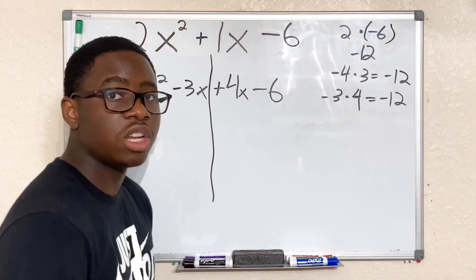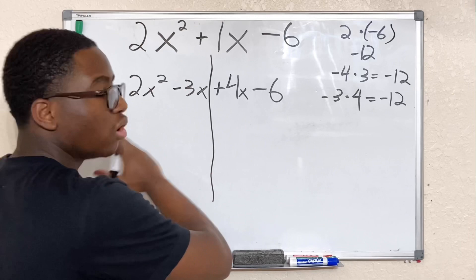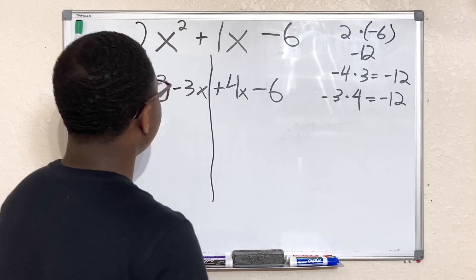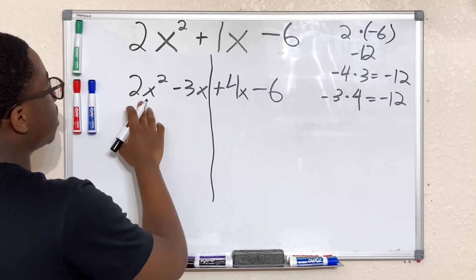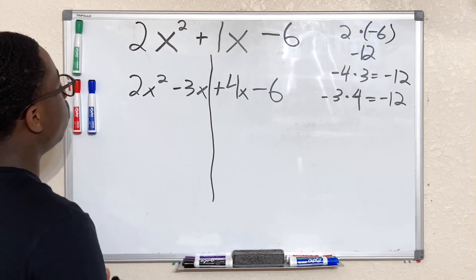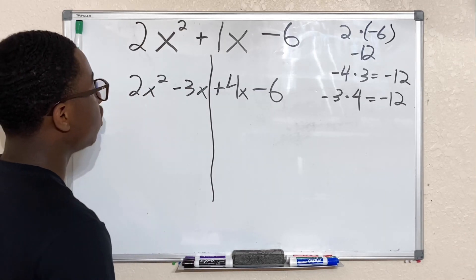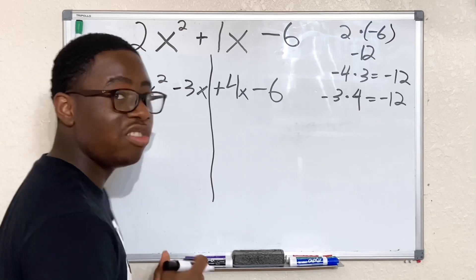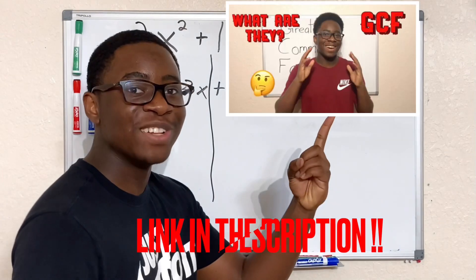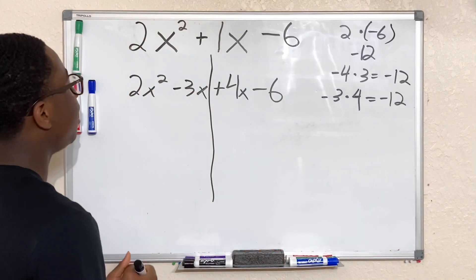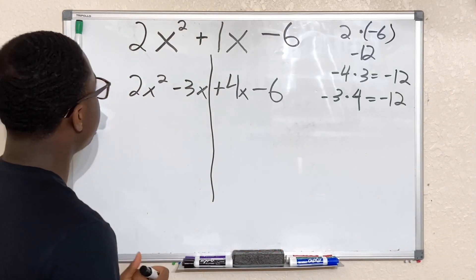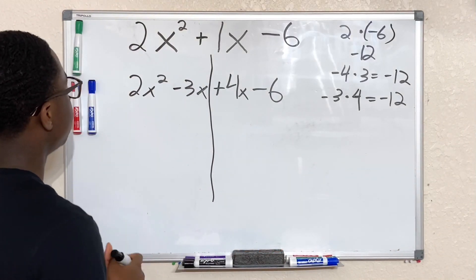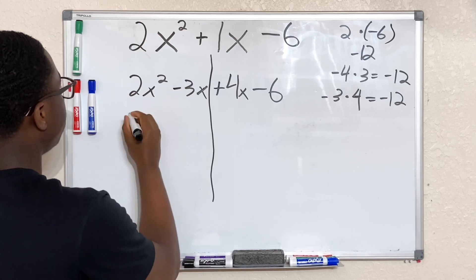Now the next thing we're going to do is go ahead and factor each side separately. So let's start with 2x squared minus 3x. What is the greatest common factor or the GCF in this equation? By the way, if you need help with GCF, I got a video for that too. Back to the main thing. Right here our greatest common factor is x, so we take x out of both equations.